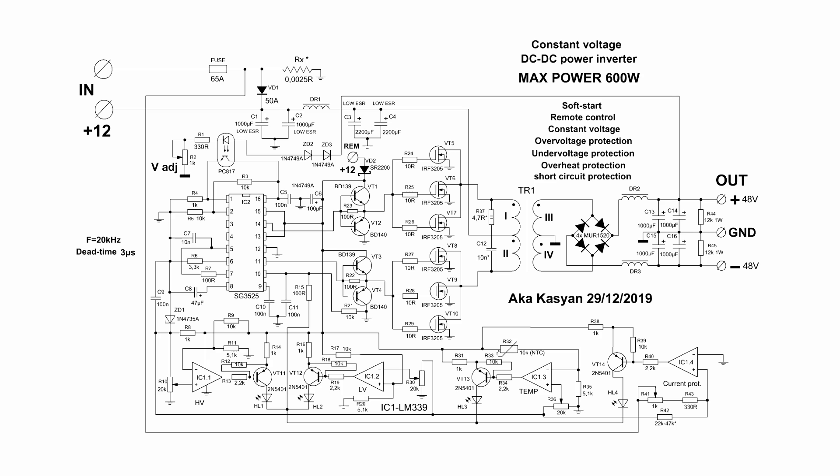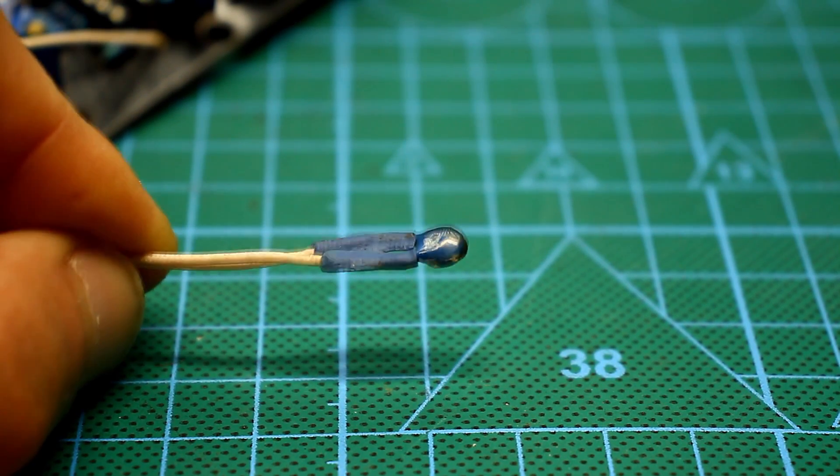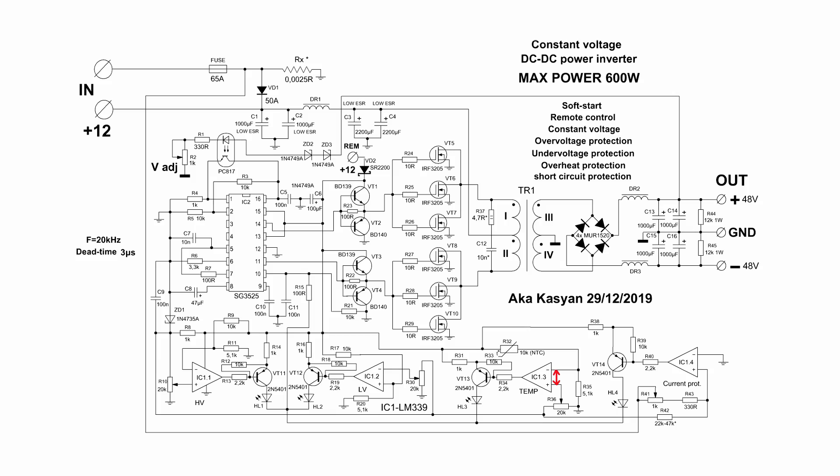The same thing will happen when overheating. As a temperature sensor, we have NTC thermistor of 10 kilohm at room temperature. When heated, it will reduce the initial resistance. Therefore, the balance at the inputs of the comparator will change. The output will set a low level so the transistor will work and the circuit will be turned off.